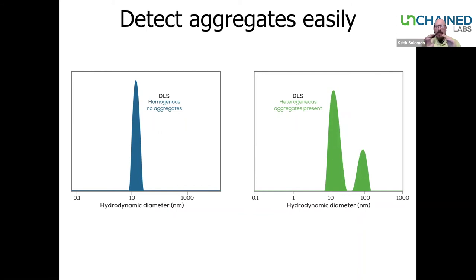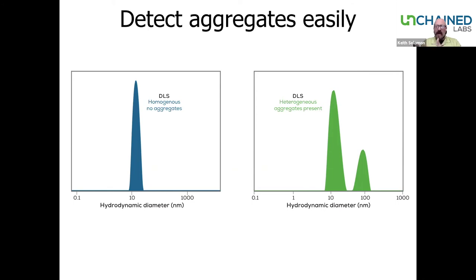DLS is a great technique for looking at colloidal stability. On the left you can see a protein at antibody size with no apparent aggregates, around 12–13 nanometers. After a stress test or some other manipulation, colloids are present — the main peak is broadened indicating multiple species, and there's a well-resolved second peak around 100 nanometers indicating the presence of very large colloids, giving you an understanding of the colloidal stability of this analyte.